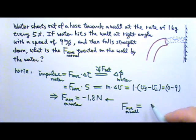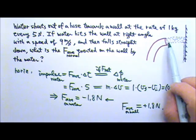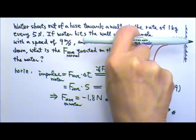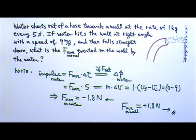That would be equal amount opposite direction. So it is positive 1.8 N and it is to the right. And it makes sense because the water shoots this way, hits the wall, so the average force on the wall would go to the right.